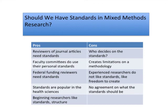The question often comes: should we even have standards in mixed methods research? I want to review a few pros and cons on both sides. Those arguing for standards note that reviewers assessing journal articles need some standards. With a large collection of reviewers available, editors feel there needs to be a standard that all reviewers might use as they assess manuscripts, ensuring high quality assessment across all reviews.